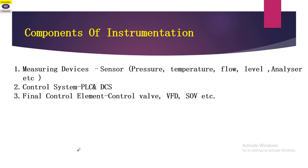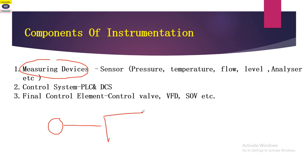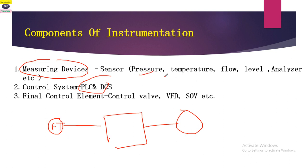Now the next point is the components of instrumentation. The first component is the measuring device. The second component is the PLC and DCS. The third component is the final control element. The measuring device can be any pressure element, temperature element, flow element, level element, or analyzer.